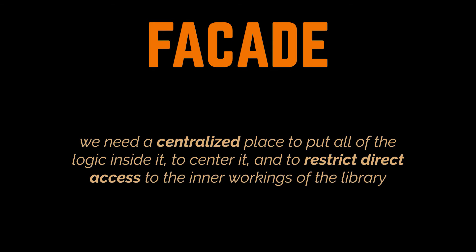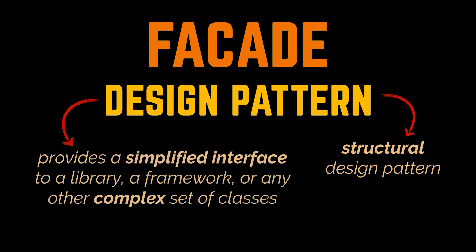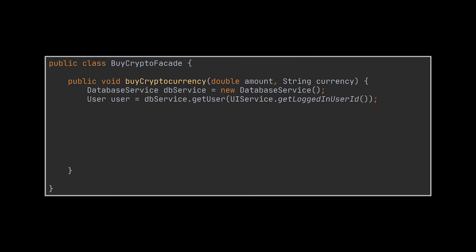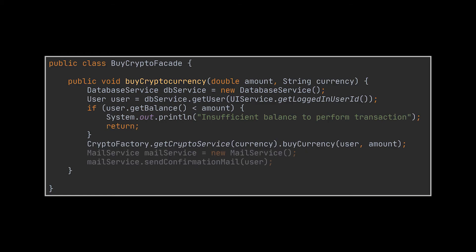It is a simplified interface for all the complex stuff happening in the background, and that is exactly what the facade pattern is all about. This pattern is a structural design pattern that provides a simplified interface to a library, a framework, or any other complex set of classes. To apply the facade pattern in this example, all we need to do is create a new class — let's name it BuyCryptoFacade. In this class we create a method that takes as parameters the minimal needed information to proceed with the transaction. First, we retrieve the logged-in user from the database, then check if the balance associated with this user allows them to perform the transaction, then perform the transaction, and finally send an email to confirm it.